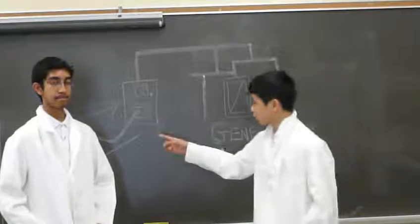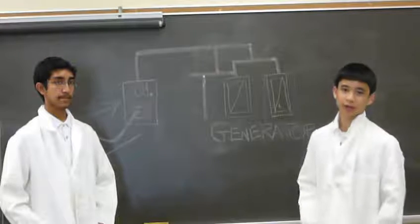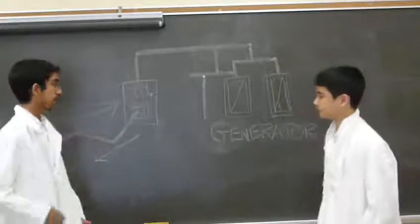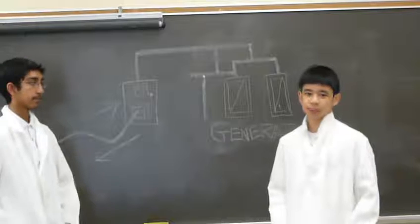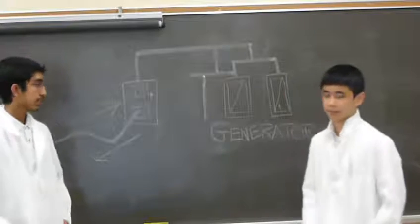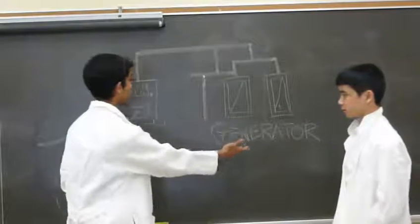The current that flows through cords that are plugged in your wall sockets are called alternating currents. Alternating currents flow back and forth in regular intervals called cycles. Cycles is a process of repetition. This is the current that flows from generator to your home.